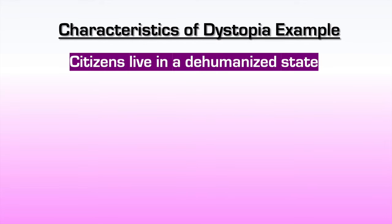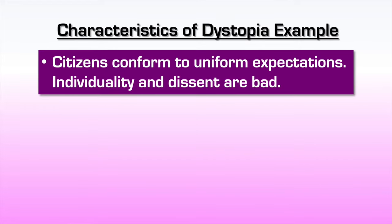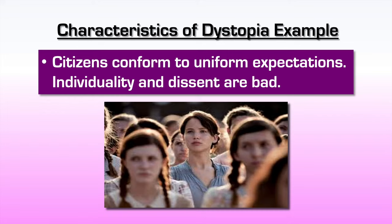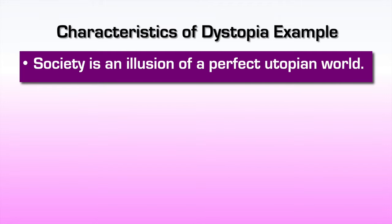Characteristics of dystopia examples: Citizens live in a dehumanized state. Another example — citizens conform to uniform expectations; individuality and dissent are bad. Another characteristic: society is an illusion of a perfect utopian world.